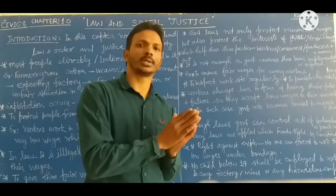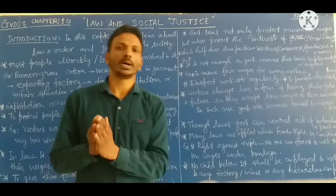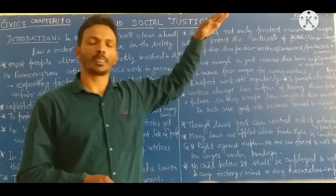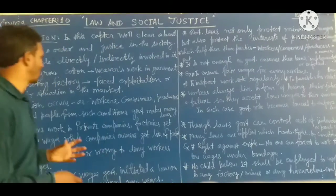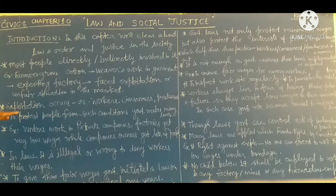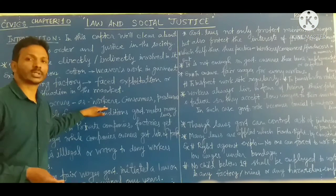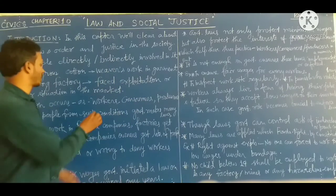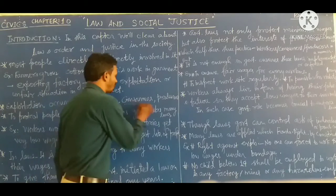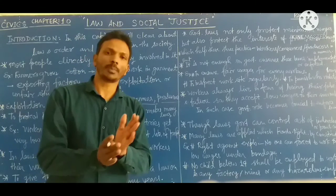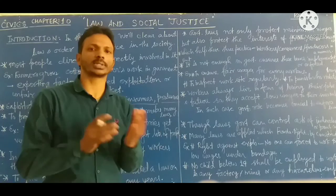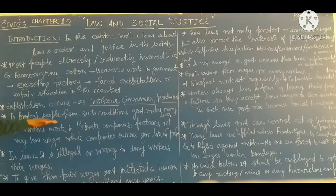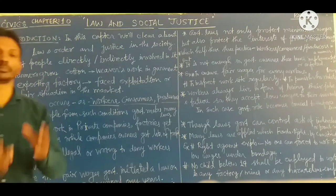Sometimes, in this kind of chain of market, we can see the exploitation of businessmen over workers and producers. Exploitation occurs with workers, consumers and producers. So we can understand how the government can provide them with social justice. To protect people from such conditions, government makes many laws.